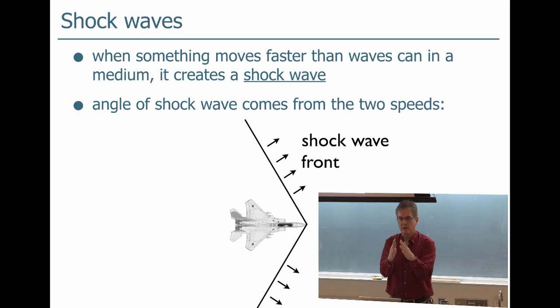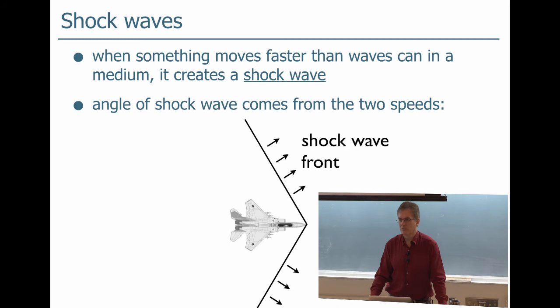You see a bow wave and it's got this characteristic angle to it. The faster the boat is going, the more pointy the two waves are coming off the front of the boat. Likewise with a high-speed supersonic fighter jet or something like that, it produces a shock wave.